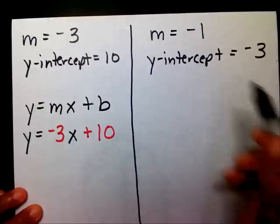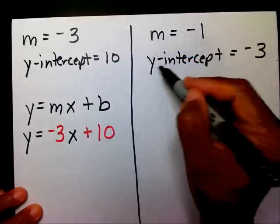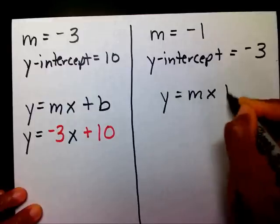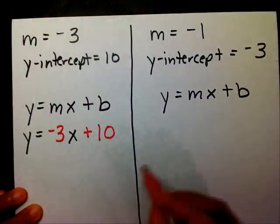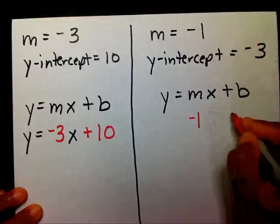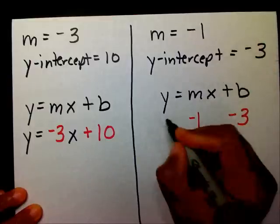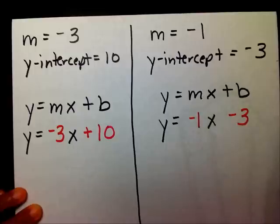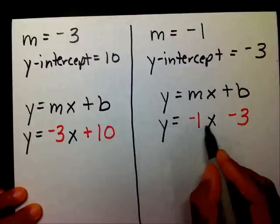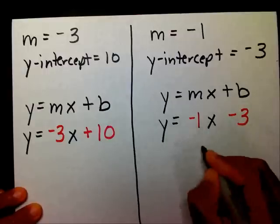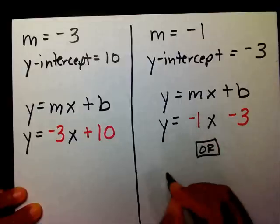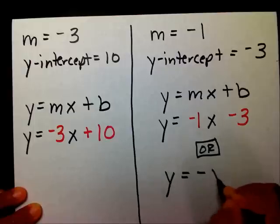Given that my slope is negative 1 and my y-intercept is negative 3, I can write y equals mx plus b. I substitute negative 1 in for m and minus 3 in for b, then bring down my y equals and my x. It's y equals negative 1x minus 3, or since the coefficient is negative 1, I can write y equals negative x minus 3.